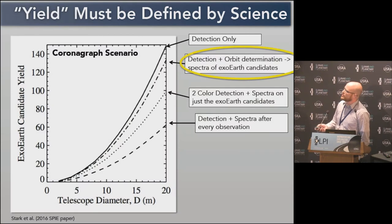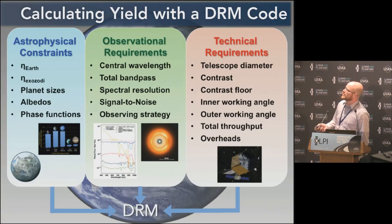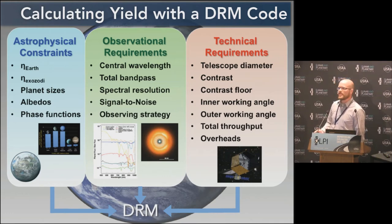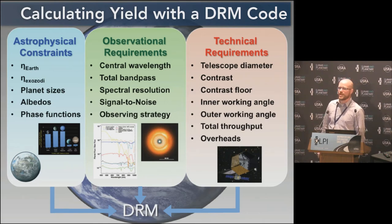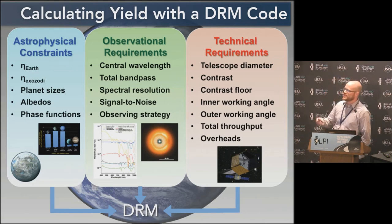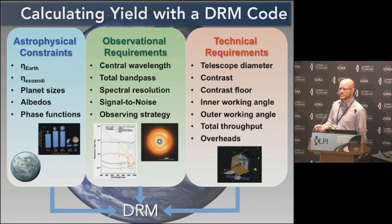I want to briefly cover how we actually calculate these yields. We use a design reference mission code that takes into account a very long list of input parameters and then simulates the mission end to end at a high level. We take into account astrophysical constraints, assumptions about the planet — its albedo, phase function, orbital distribution — observational requirements like wavelengths and spectral resolutions, and then technical requirements: how big a telescope, geometry of the primary mirror, coronagraph performance. We simulate the mission end to end over its nominal lifetime.